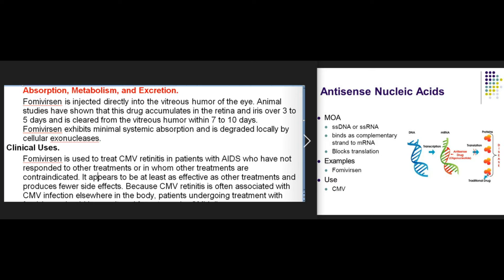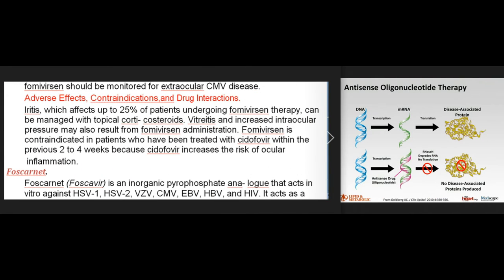Clinical uses: Fomivirsen is used to treat CMV retinitis in patients with AIDS who have not responded to other treatments or in whom other treatments are contraindicated. It appears to be at least as effective as other treatments and produces fewer side effects. Because CMV retinitis is often associated with CMV infection elsewhere in the body, patients undergoing treatment with fomivirsen should be monitored for extraocular CMV disease. Adverse effects: Iritis, which affects up to 25% of patients undergoing fomivirsen therapy, can be managed with topical corticosteroids. Vitreous and increased intraocular pressure may also result from fomivirsen administration. Fomivirsen is contraindicated in patients who have been treated with cidofovir within the previous 2 to 4 weeks, because cidofovir increases the risk of ocular inflammation.